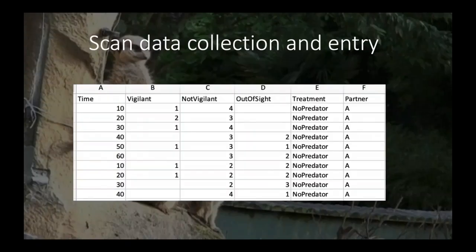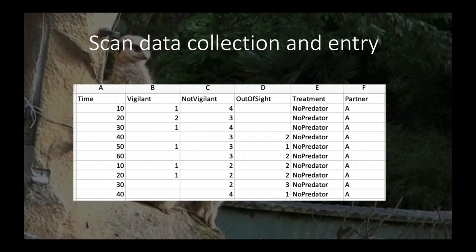Here is a screenshot of the data sheet for the scan data. In our videos, you're going to take a scan every 10 seconds and count the number of individuals that are vigilant, not vigilant, or out of sight. We have three treatment groups: the presence of no predator, an aerial predator, or a terrestrial predator. Again, you're going to want to include your name and your partner's name.